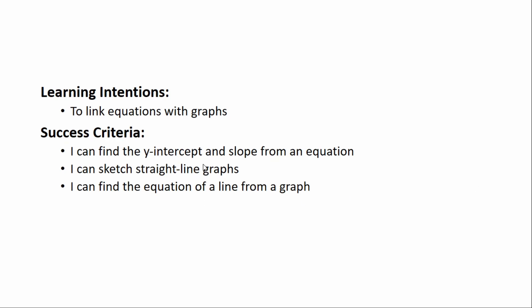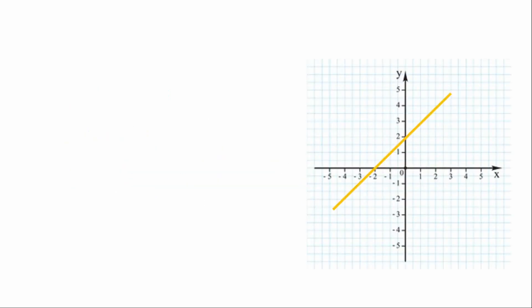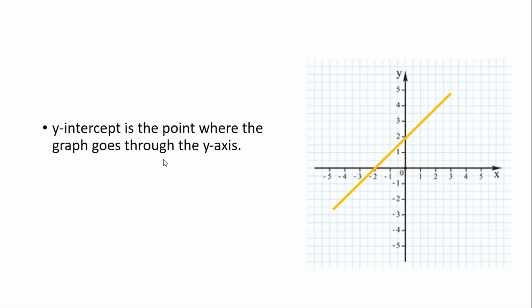To find the y-intercept, we need to start off by knowing what it is. The y-intercept is just the point where the graph goes through the y-axis. On this graph, the x-axis goes horizontally and the y-axis goes vertically. The y-intercept is where the graph crosses the y-axis, so that's right there.